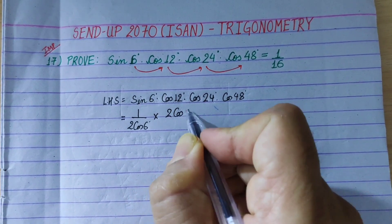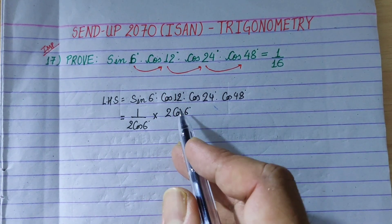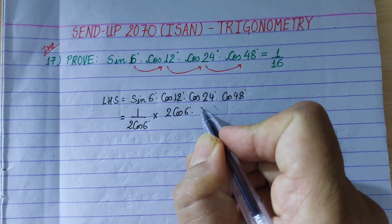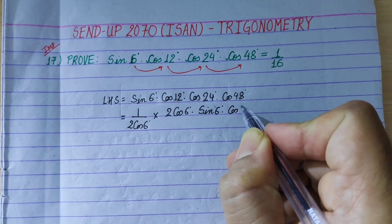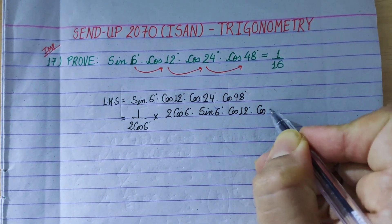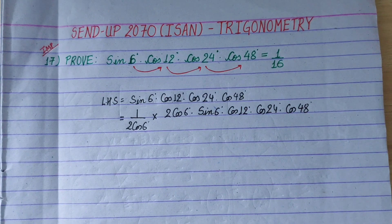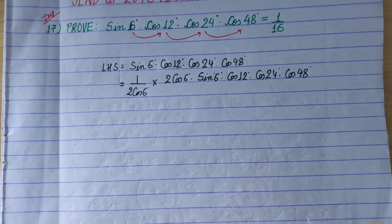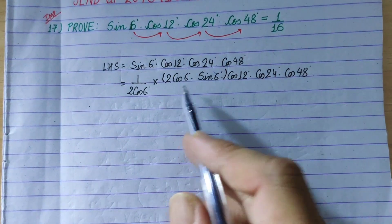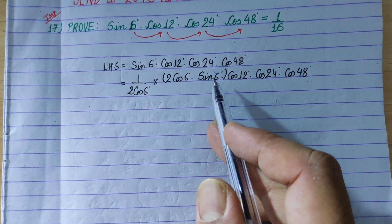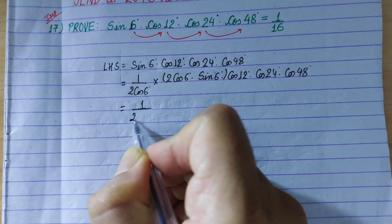In the numerator and denominator, multiply by 2 cos 6°. We apply the formula 2 sin A cos A equals sin 2A. So 2 cos 6° times sin 6° gives us sin 2×6, which is sin 12°.